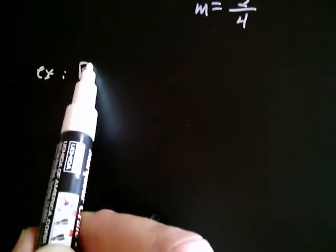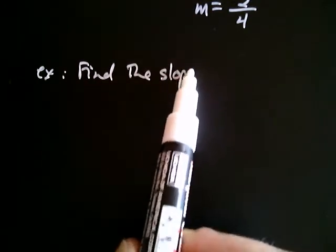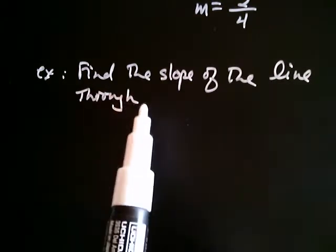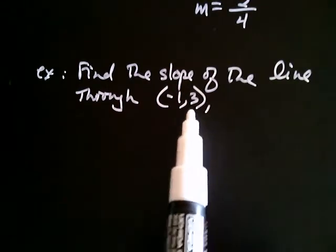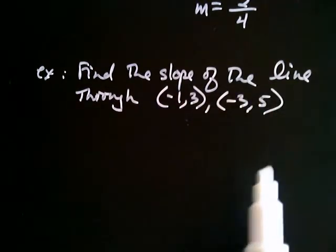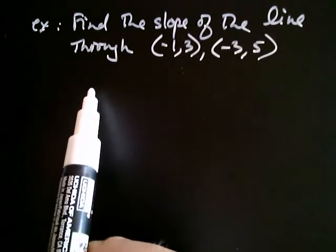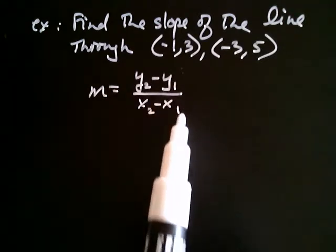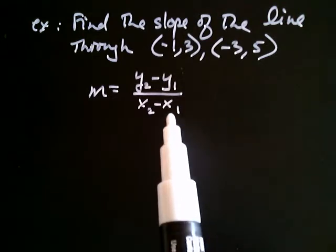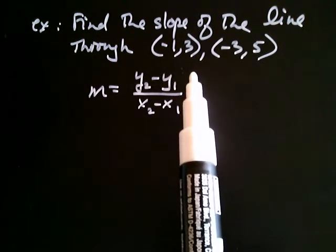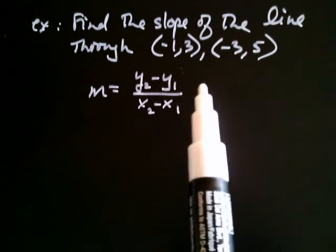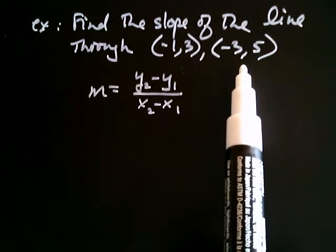Let's go ahead and find the slope of another line where you don't have the graph — we're just going to make use of the formula. Find the slope of the line through the points negative one, three and negative three, five. We remember the formula: m equals y sub two minus y sub one divided by x sub two minus x sub one. The only thing you have to do is decide which is the first point and which is the second. It turns out that decision doesn't matter — you'll get the same answer no matter what. So let's say this is point one and this is point two.